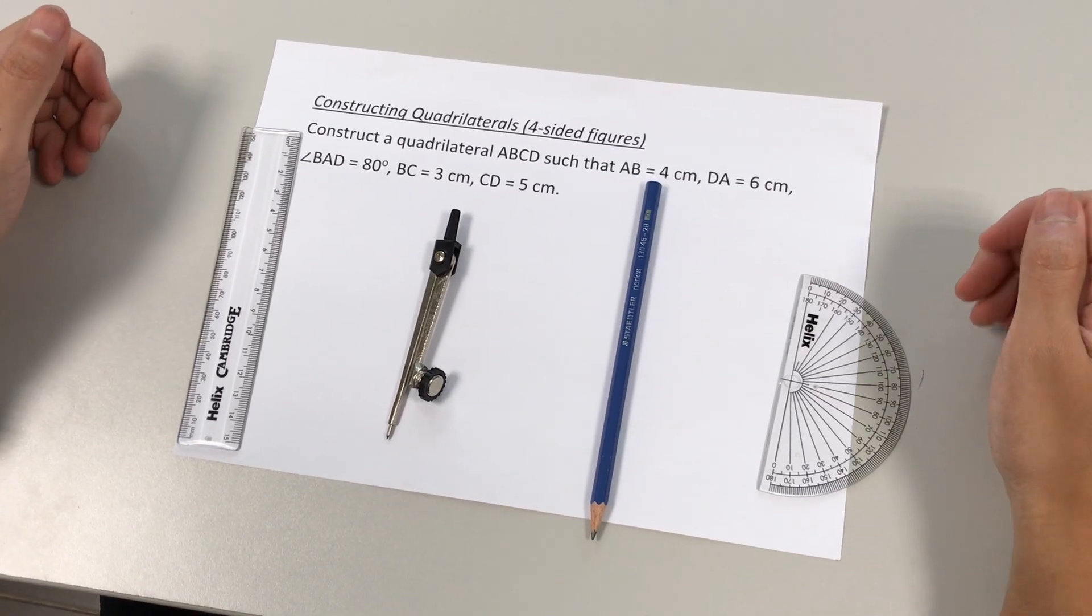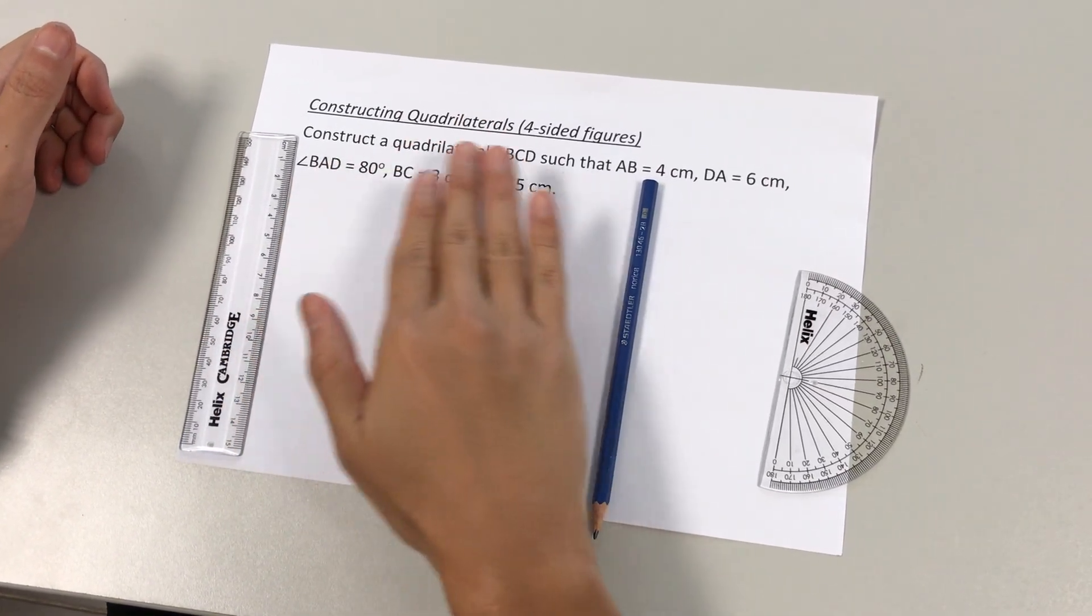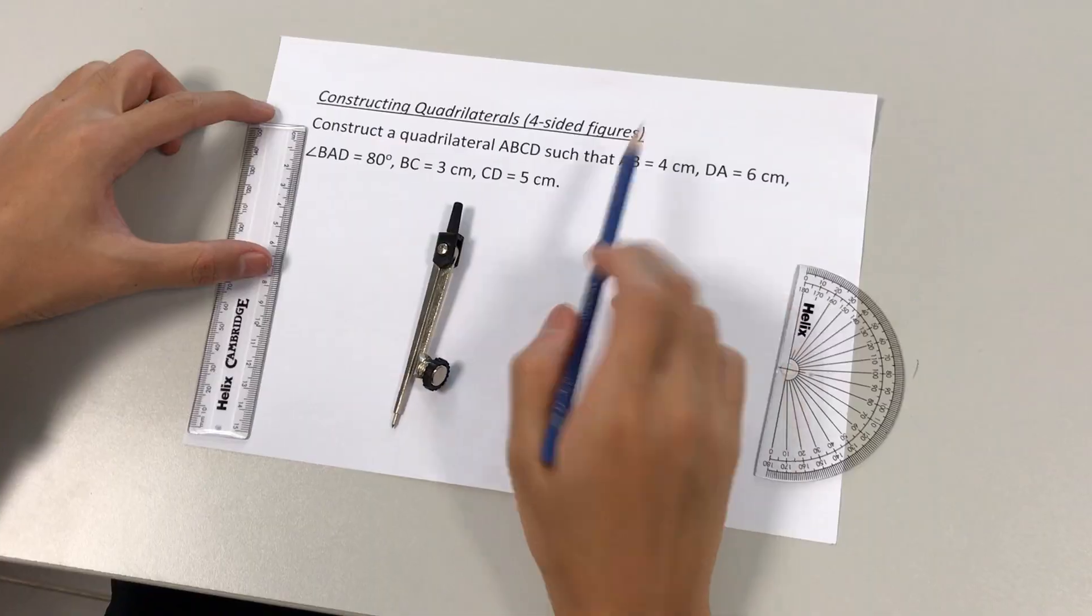Okay, welcome back. Today we're going to learn how to construct a quadrilateral. Quadrilateral simply means four-sided figures.